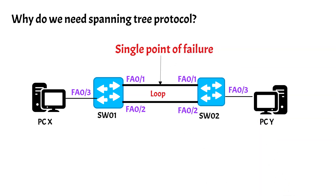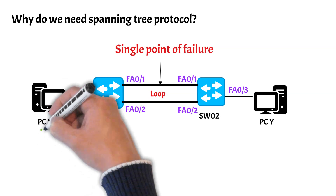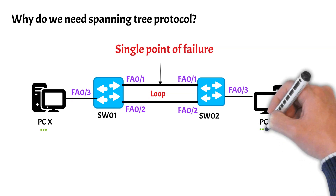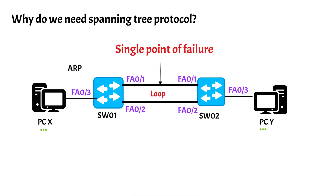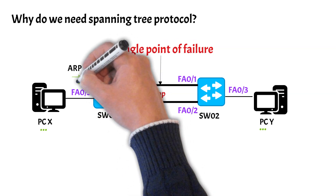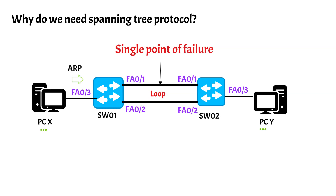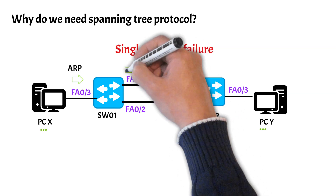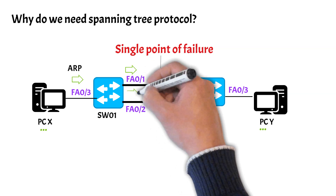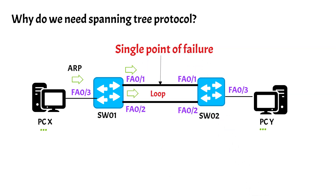Without spanning tree enabled, let's see how a frame is processed. If PCX wants to talk to PCY, it will send an ARP to find out the location of PCY, and the packet with the green arrow shows a broadcast frame sent by PCX. When switch 1 receives a broadcast frame it forwards that frame to all ports except the port where it received the request — out of FA0/1 and FA0/2. Switch 2 then receives the broadcast frame from FA0/1 of switch 1 and forwards it to FA0/2 and FA0/3.